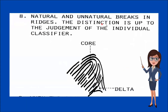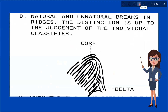Number eight: natural and unnatural breaks in ridges. The distinction is up to the judgment of the individual classifier. These are cases where the ridges are cut or broken. What you have to do is just count the ridges touched by the straight line drawn from the delta to the core. In this case we have one, two, three, four, five, six, seven, eight, nine — so we have nine counts. That's how simple the rule is: whenever it touches the ridge, we count it.